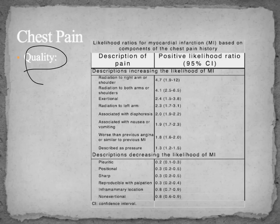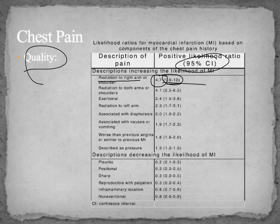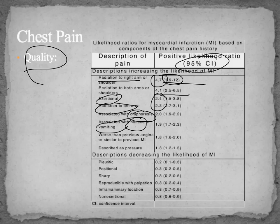You want to check for the quality of pain. Radiation to the right arm has a strong likelihood ratio of being an MI — anywhere between 1.9 and 12, but the 95% confidence interval puts it at 4.7. Radiation to both arms or shoulders has a very strong likelihood ratio. If it's exertional or radiation to the left arm, these are also indicative but with lower likelihood ratios. Diaphoresis, nausea and vomiting, or a history of angina with suddenly worsening pain — these all suggest looking for an MI.